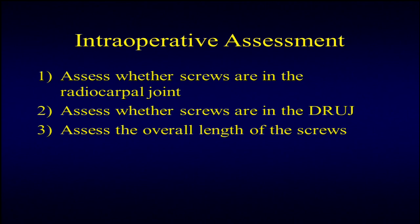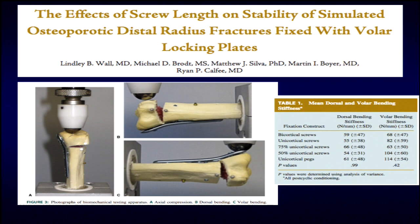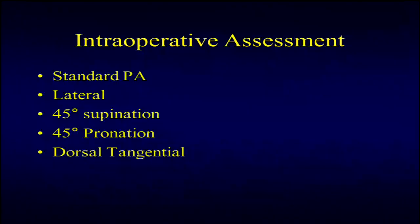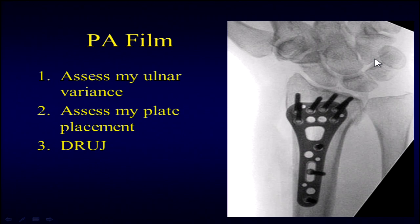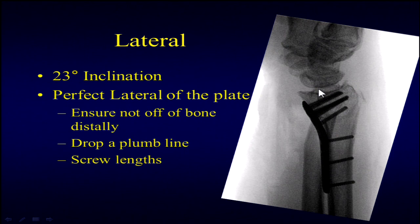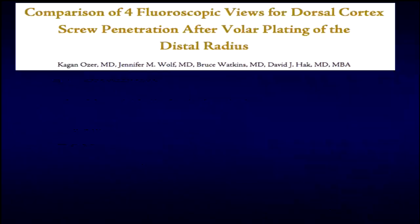For intraoperative assessment, we look at where our screws are—whether they're in the DRUJ, whether they're in the joint, and the overall length. Dr. Wall's paper looked at the strength and integrity of different screw conformations, recommending 75% of the subchondral length to guarantee no prominent screws. I want a true PA to look down the DRUJ and a slightly tilted shot to look down the radiocarpal joint, as well as overall plate alignment. On the lateral I use a 23-degree inclination film to confirm screws are just subchondral. Drop a plumb line to make sure you're not past the watershed line, which leads to tendon fraying, impingement, and possible tendon rupture.